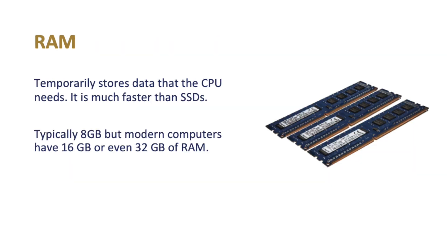The next component is RAM, which temporarily stores data that the CPU needs. It's much faster than SSDs. Normally computers have around 8 GB of RAM, though modern systems now include 16 GB or 32 GB as standard. Remember, all of this is temporary data — the moment you turn your computer off, the data in RAM just vanishes.